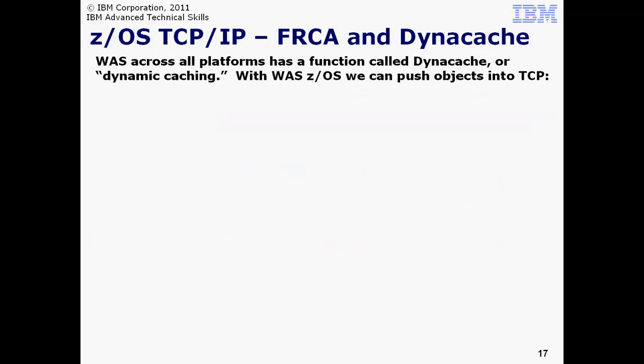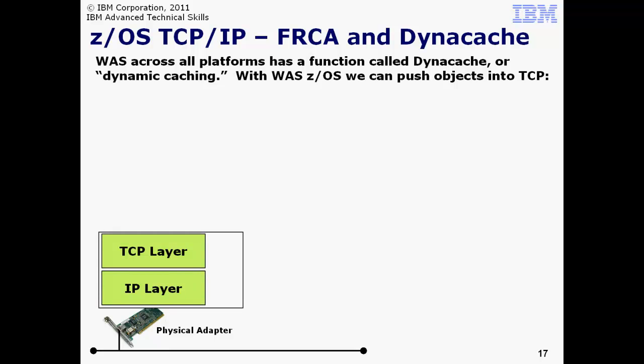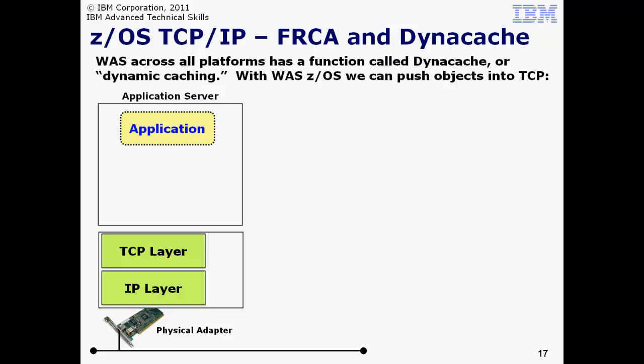Now let's turn our attention to the Fast Response Cache Accelerator, or FRCA for short. WAS on all platforms has a function called Dynamic Caching, or Dynacache for short, that allows applications to specify what content to cache. Caching content provides faster web serving for requests that come along later for that content. The FRCA function in WAS z/OS is a way to extend the Dynacache capability so the cached content may be pushed even lower in the processing stack. The lower an object is cached, the faster it may be served out later. We start with the physical network and the network adapter used by a mainframe in the z/OS operating system. We then layer on top of that the TCP/IP function. On z/OS, that's part of the Communication Server function. Then the application server itself, with the application shown as running inside. Dynacache is a feature of WAS on all platforms.